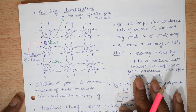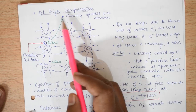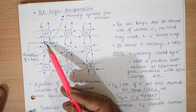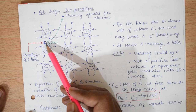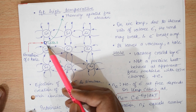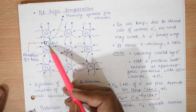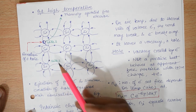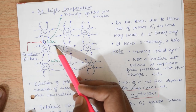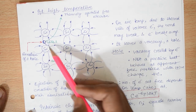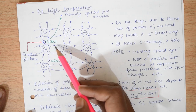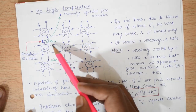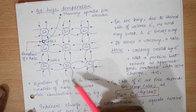At high temperature, some of the electrons in the valence band get thermally excited. They leave their place, the covalent bond gets broken, and they may move to the conduction band. A neighboring electron from a neighboring covalent bond may try to fill this vacant place, thereby creating a hole. The neighboring electron moves to fill the hole, and the hole keeps on moving. So the movement of electrons and movement of holes occur simultaneously. At high temperature, equal numbers of electrons and holes are formed.